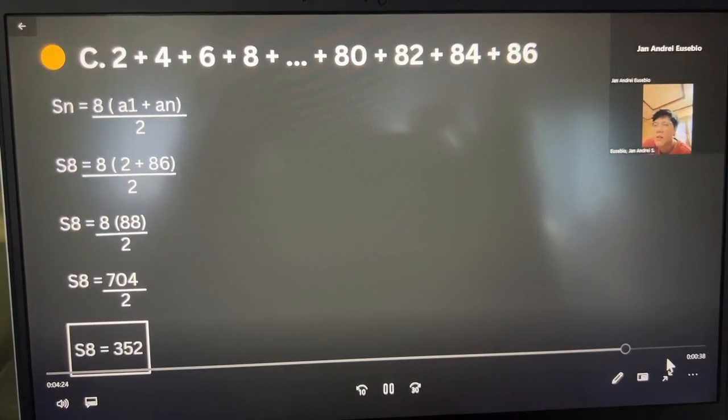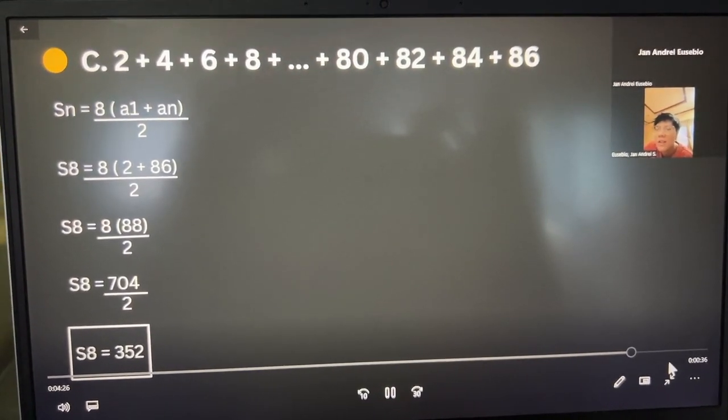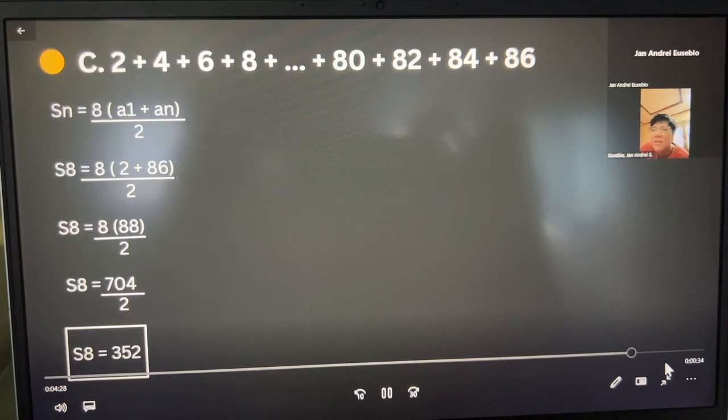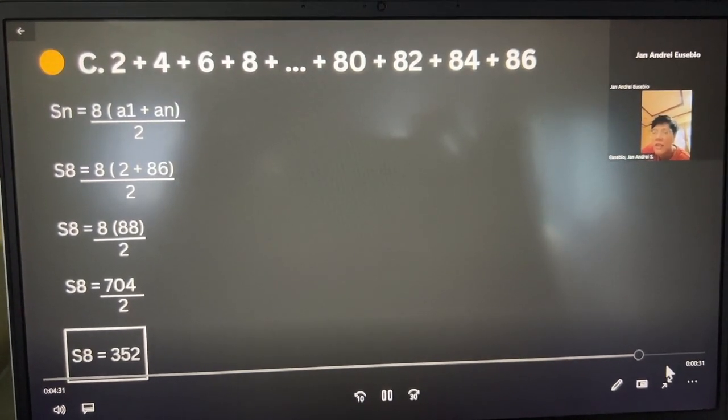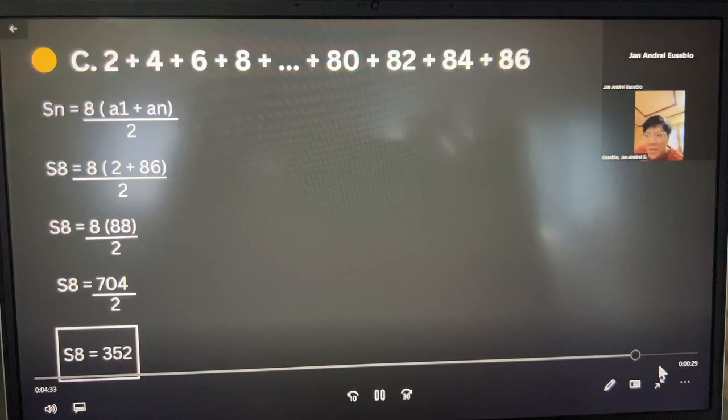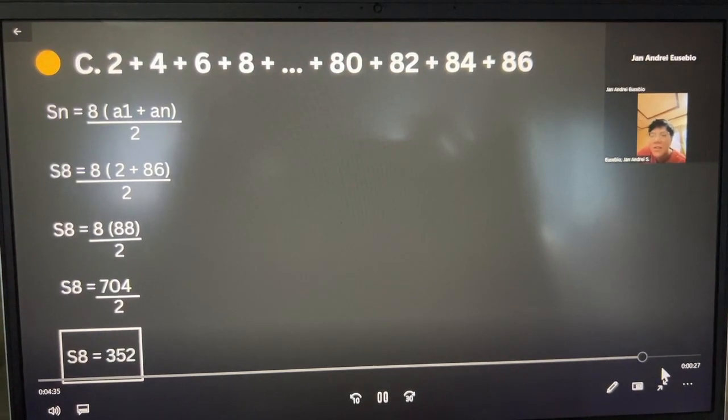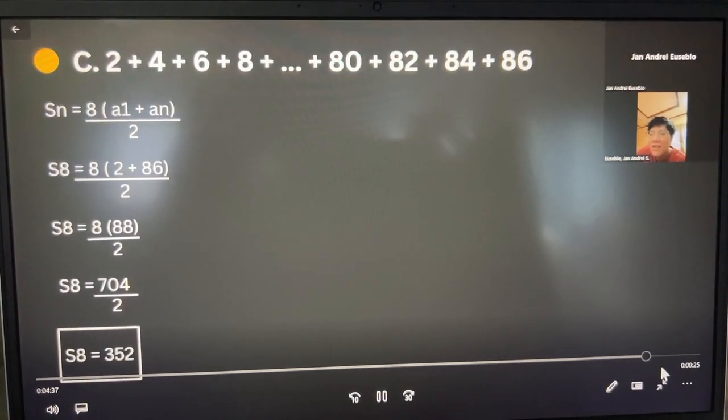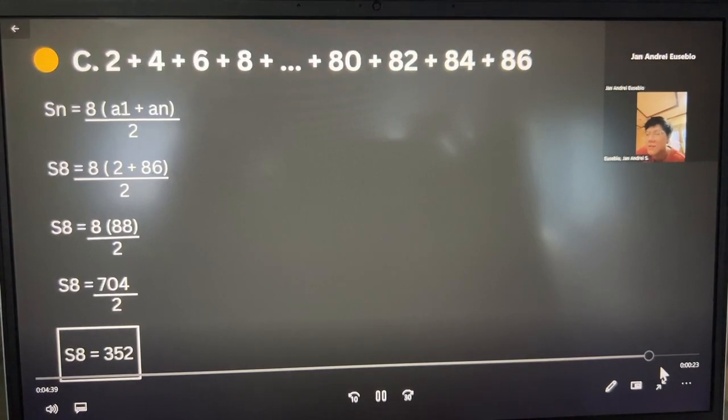And then over 2, and then 8 times 88 is 704. And then we divide this again by 2, and the answer is S sub 8 equals 352.